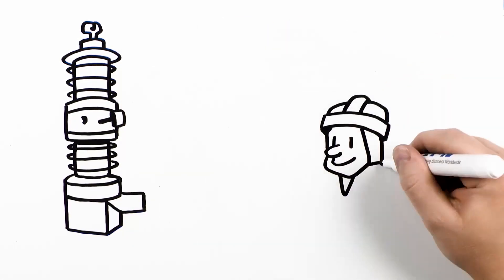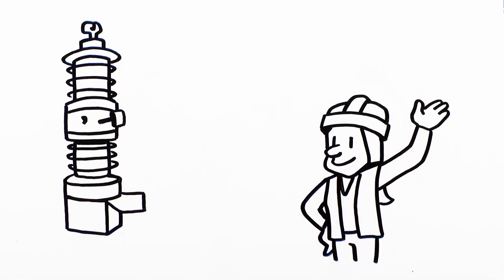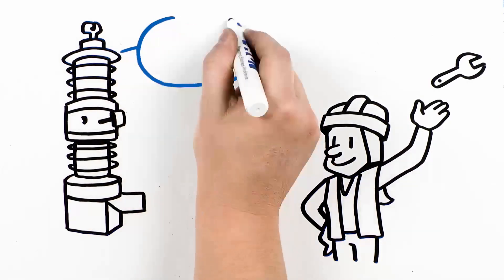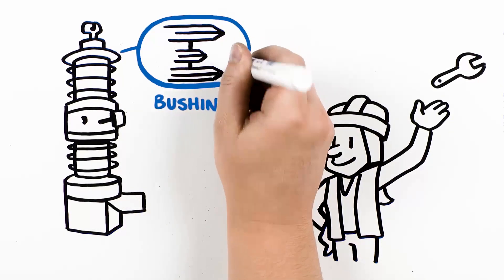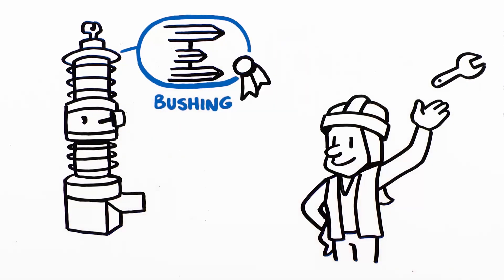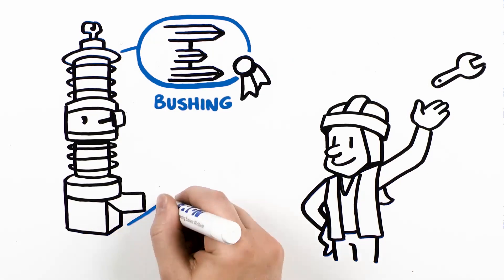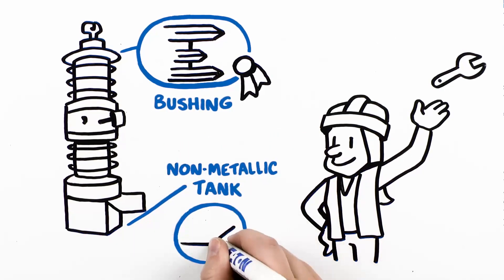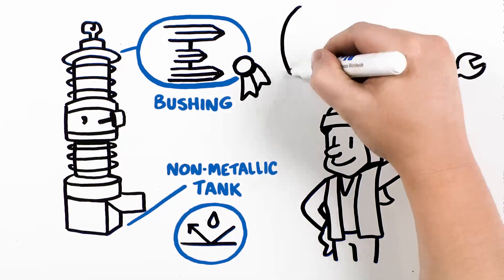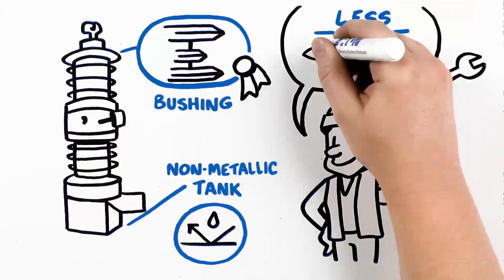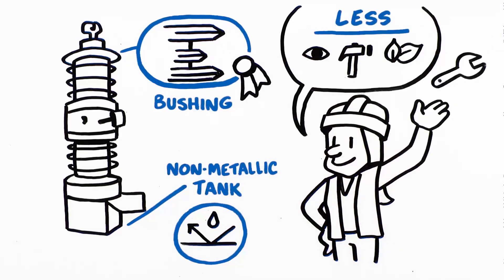Tri-Sync provides an environmentally friendly solution with little to no maintenance. The switch features an alternating shed bushing design, tested and proven to perform in the highest levels of pollution. The fiberglass non-metallic tank prevents corrosion for maximum reliability. And no SF6 gas or oil means less monitoring, maintenance, and environmental impact.